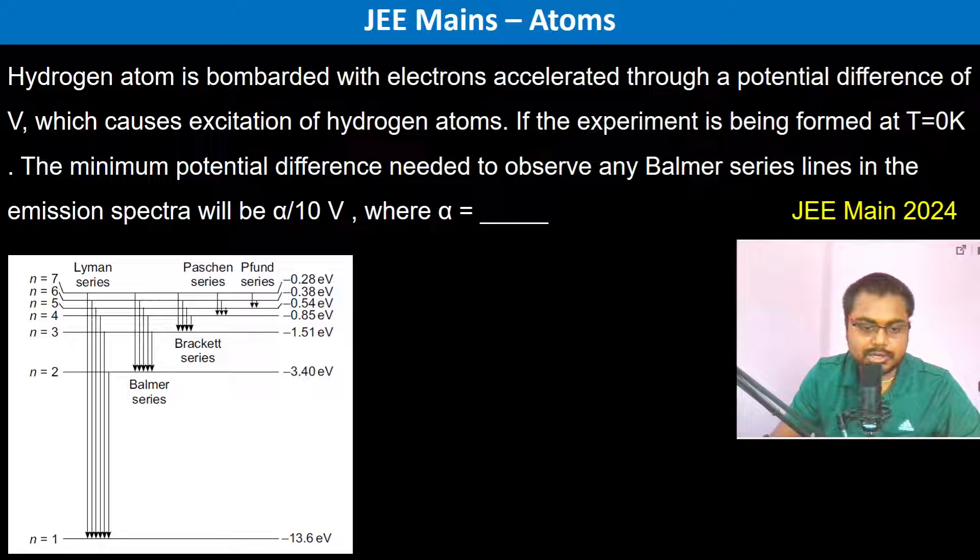Therefore, the electron is here. Now this electron has to be excited in such a way that the Balmer series line is going to be produced. So at least the electron must reach the third orbit. Then only, from third to second, at least one series line is going to be seen.